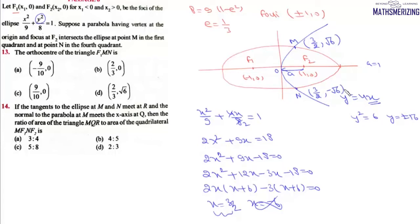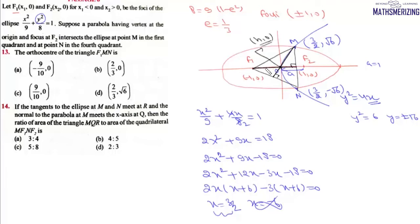The first question asks us to find the orthocenter of triangle F1MN. We draw triangle F1MN. Since M and N are symmetric about the x-axis, the altitude from F1 lies along the x-axis itself. This means the orthocenter of triangle F1MN also lies on the x-axis.